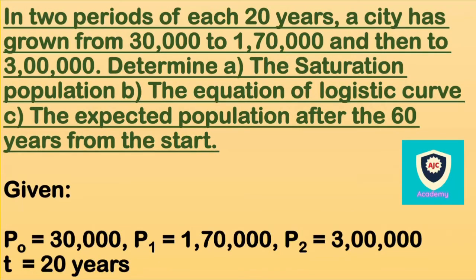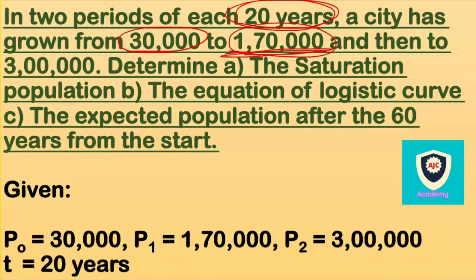In two periods of each 20 years, a city has grown from 30,000 to 1,70,000, and then to 3,00,000. So over the first 20 years the population is 30,000; at 40 years it is 1,70,000; and at 60 years it is 3,00,000. We need to determine: A) the saturation population, B) the equation of the logistic curve, and C) the expected population after 60 years from the start.